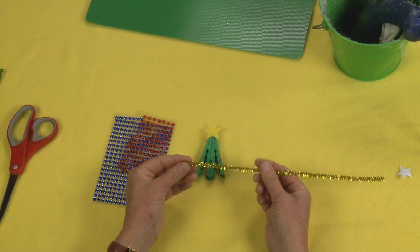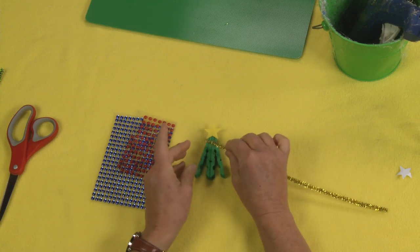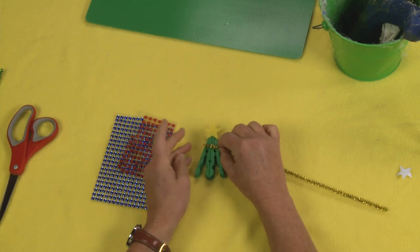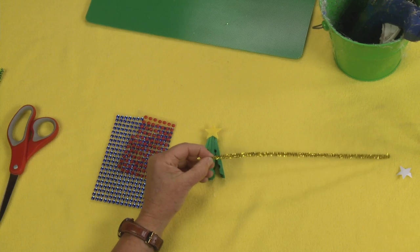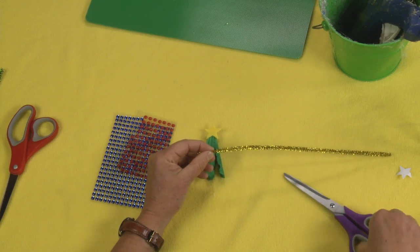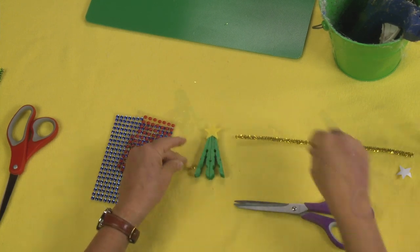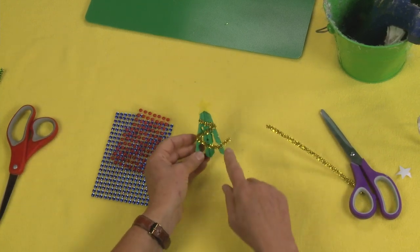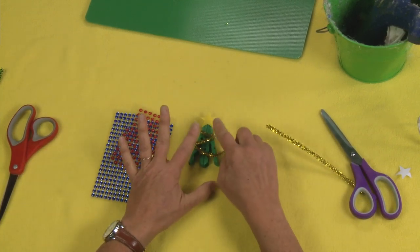And now what I'm going to do is I'm going to use some of this fabulous pipe cleaner to make my garland. And if you have a little extra you can always cut that off. And I'll cut that off as soon as that's nice and dry.